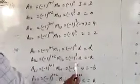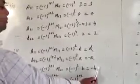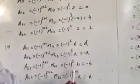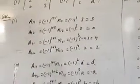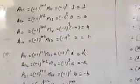Then A21 is minus 1 to the power 2 plus 1 into the minor of A21, which is minus 1 to the power 3, and the minor value is D — on simplification, we get minus D. Then A22: the cofactor of element A22 is minus 1 to the power 2 plus 2 into M22, which is minus 1 to the power 4 into A, equal to A. So these are the cofactors of the elements of the determinant given in the second part. Thank you.